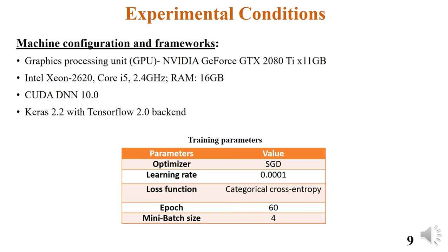This slide shows the experimental conditions including machine configuration and frameworks. The optimizer used is Stochastic Gradient Descent, the learning rate is 0.0001, categorical cross-entropy was used as the loss function, the epoch count is 60, and the mini-batch size is 4.